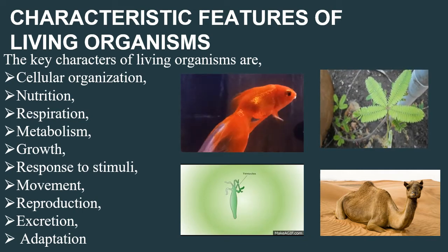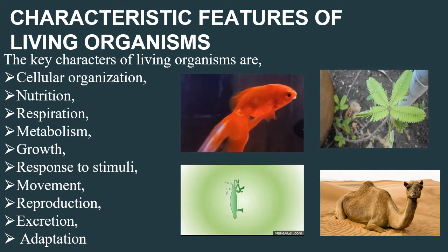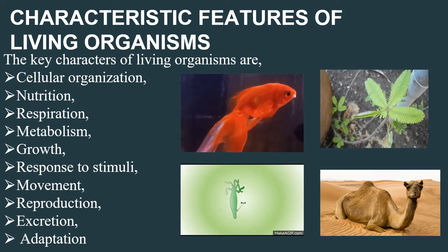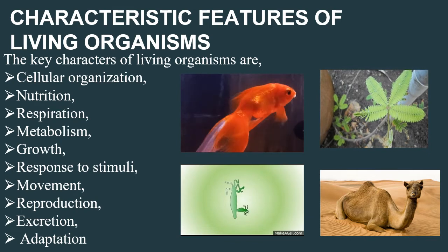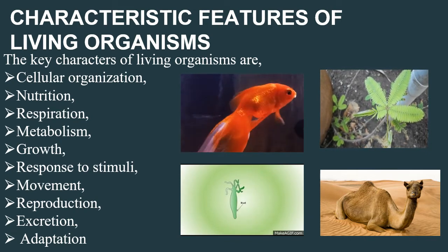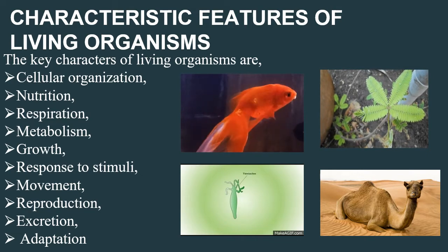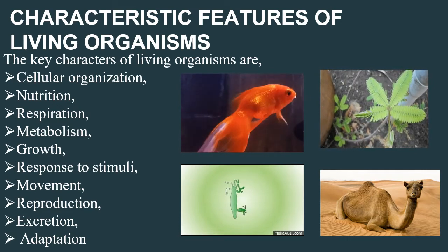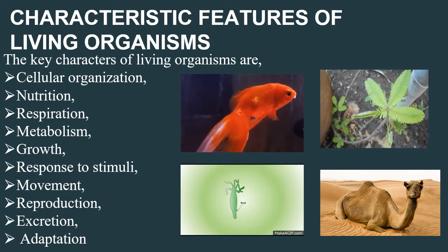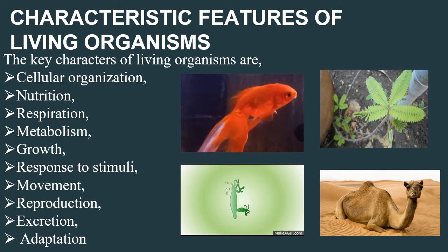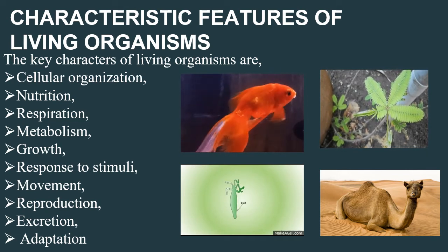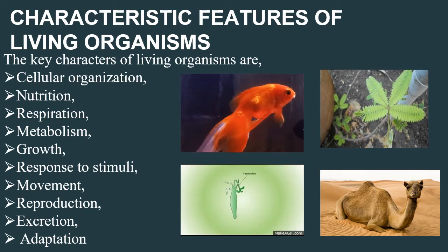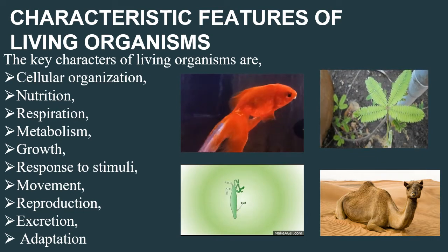Excretion is the sending out of waste products from the body. In our body, the excretory organ is the kidney. Adaptation: the camel is well adapted to live in a desert region. It can withstand temperatures up to 42 degrees centigrade. It has a hump on its back to store fat, and it has thick eyebrows and long eyelashes to protect the eyes from sandstorms.